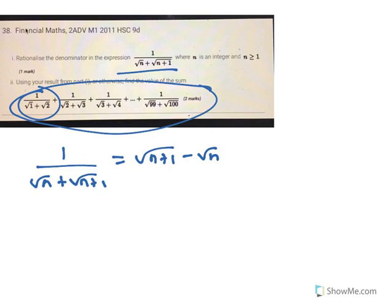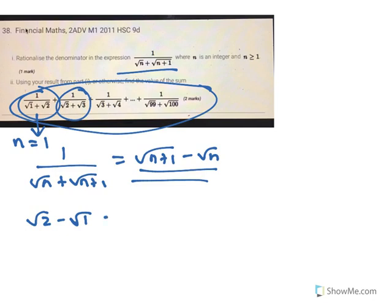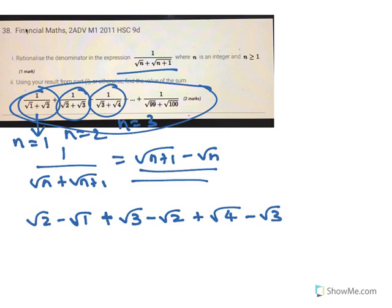So if you look at this one here, using this identity, for the first term n equals 1, so it's going to be root 2 minus root 1. The second term, n equals 2, so it's root 3 minus root 2. For the third term, n equals 3, so it's root 4 minus root 3.